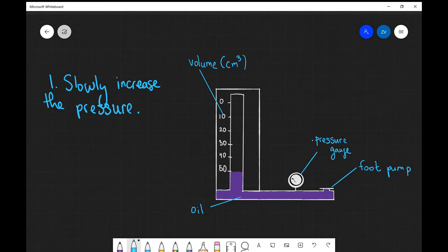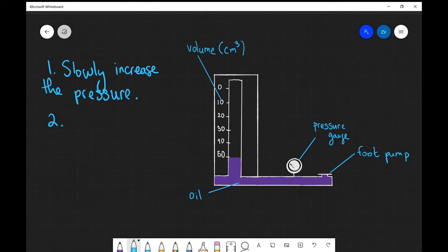The next thing we need to do is measure two things: the volume and the pressure. The volume we're going to measure with the volumetric scale on the left, and the pressure is going to be measured with the pressure gauge.